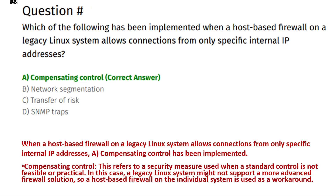The correct answer is option A, compensating control. When a host-based firewall on a legacy Linux system allows connections from only specific internal IP addresses, a compensating control has been implemented. This refers to a security measure used when a standard control is not feasible — in this case, a legacy Linux system might not support a more advanced firewall solution, so the host-based firewall is used as a workaround.